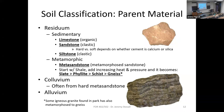Some of those gneisses are also metamorphosed from granites. On the mountains you'll see lots of metasandstones that have come down the hill in landslides — that's colluvium. And there are lots of streams, creeks, and rivers moving material around as alluvium as well.